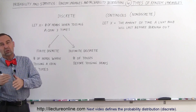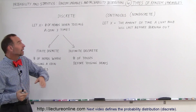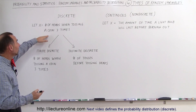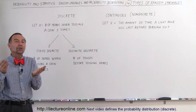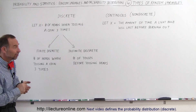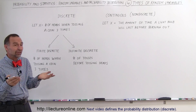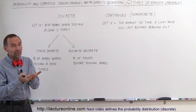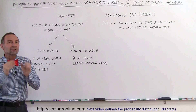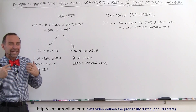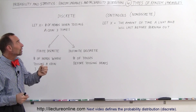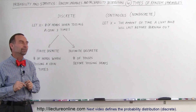It's like 0, 1, 2, 3. An example of that is when we toss a coin 3 times, and we let x represent the number of heads we get. The possibility is x can be 0, 1, 2, or 3. Those are discrete values, so that would be what we call a discrete random variable.